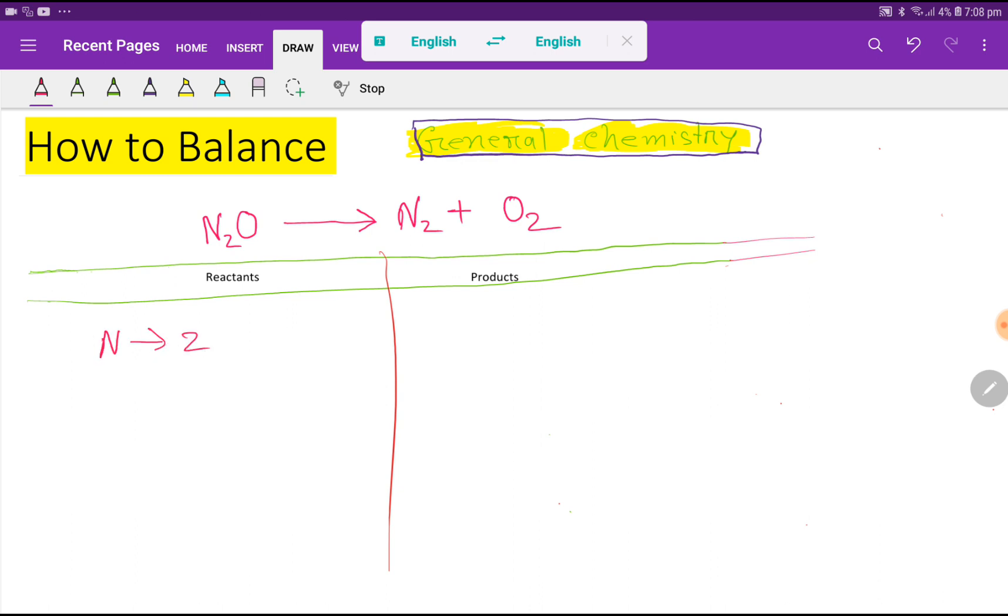Now we need to count the number of atoms. On the left hand side we have nitrogen, that is 2, then we have oxygen which is 1. On the right hand side we have nitrogen which is 2 and oxygen which is also 2.